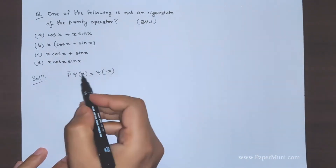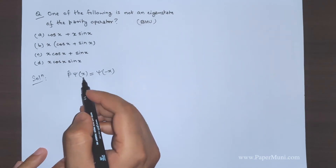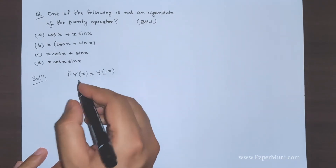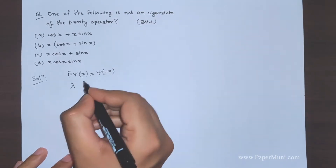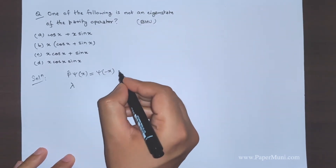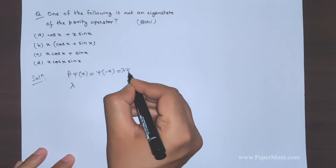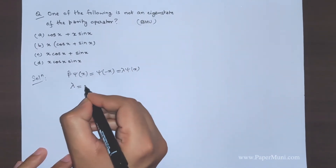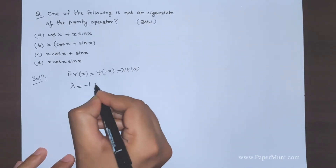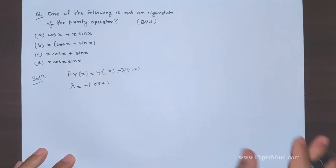This is how it affects the wave function. The eigenvalue λ satisfies P̂ψ(x) = λψ(x), and the eigenvalue is either -1 or +1.